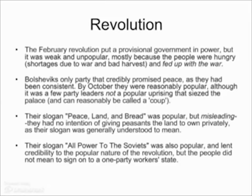Their slogan 'peace, land and bread' was very popular but was misleading, because the Bolsheviks did not intend to allow the peasants to own their lands in the long term. They were willing to redistribute the land — to take it away from the landlords — but then they would eventually want to socialize all the land and collectivize agriculture, which the peasants did not actually want.